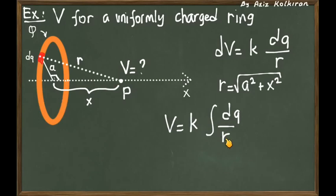We see that we can take this distance r easily outside the integral because it does not depend on any variable. Both a and x are fixed; they don't change when you run this dq all over the ring. This distance r does not change.